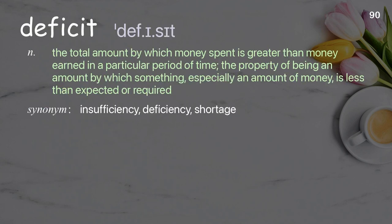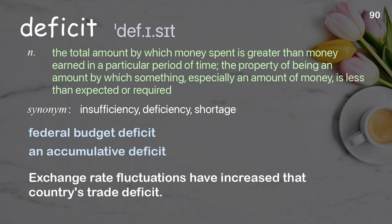Deficit: the total amount by which money spent is greater than money earned in a particular period of time; the property of being an amount by which something, especially money, is less than expected or required. Examples: federal budget deficit, an accumulative deficit. Exchange rate fluctuations have increased that country's trade deficit.